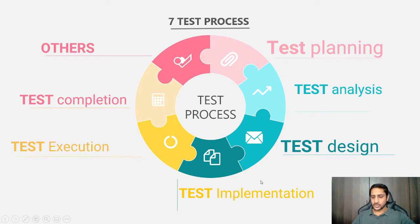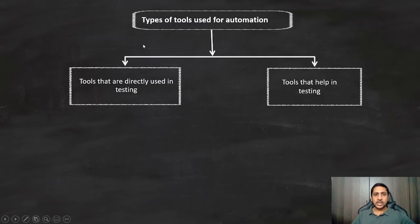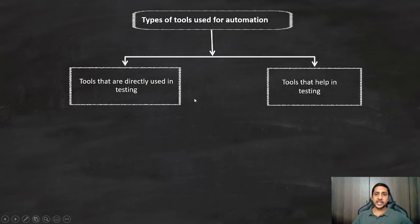First we need to know the types of tools used for automation. We have two categories: the first is tools that are directly used in testing — designed so they can be directly used in the testing activity. The second category is tools that help in testing, used as support for the testing activity.